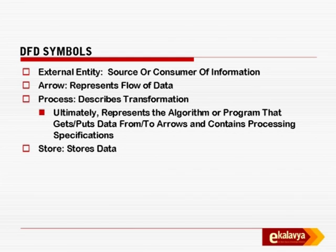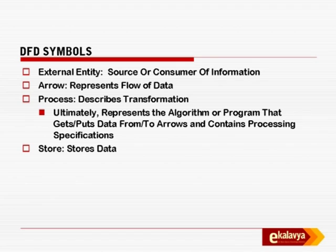These were the DFD symbols: external entity is a source or consumer of information; arrow represents flow of data; process describes transformation — ultimately represents the algorithm or program that gets or puts data from or to arrows, and contains a processing specification. Processing specifications are technically called PSPECs. Ideally you could write an actual computer program for a PSPEC and your software would be ready, but it is not that simple because you do not write software that way. There is a phase called design where many of these processes might be merged or further split. But essentially, you are capturing the complete crux of what is to be done and how it is to be done during the analysis phase.